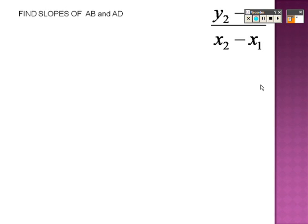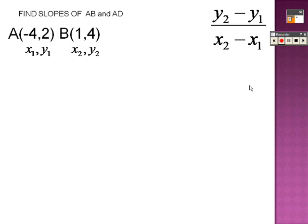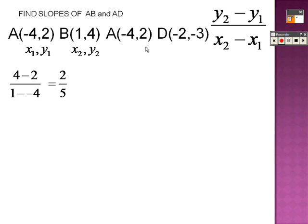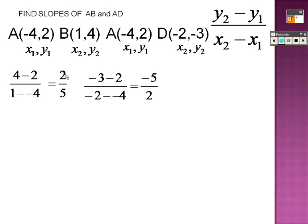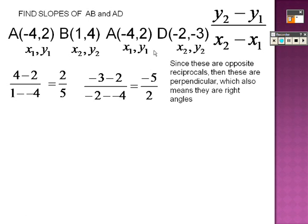I'm going to find the slopes of AB and AD. For AB, using the points for A and B, it's change in Y over change in X: 4 minus 2 over 1 minus negative 4, which gives me 2 fifths. For AD, that's negative 3 minus 2 over negative 2 minus negative 4, which gives me negative 5 over 2. They are opposite reciprocals, so AB and AD form a 90-degree angle — they are perpendicular, which means they are right angles.